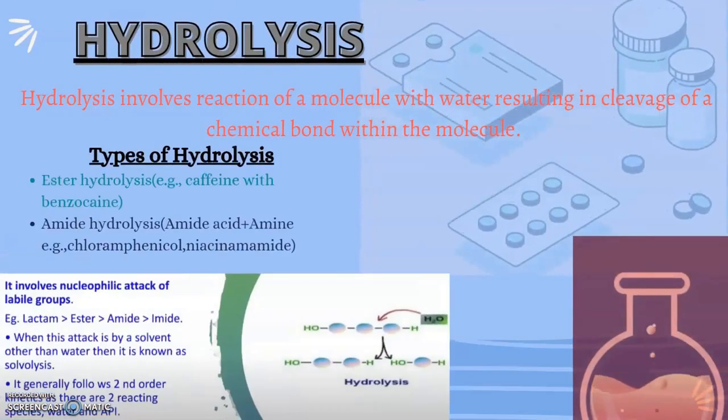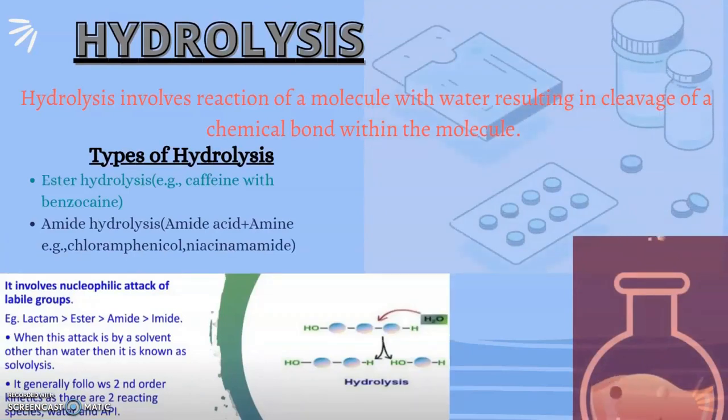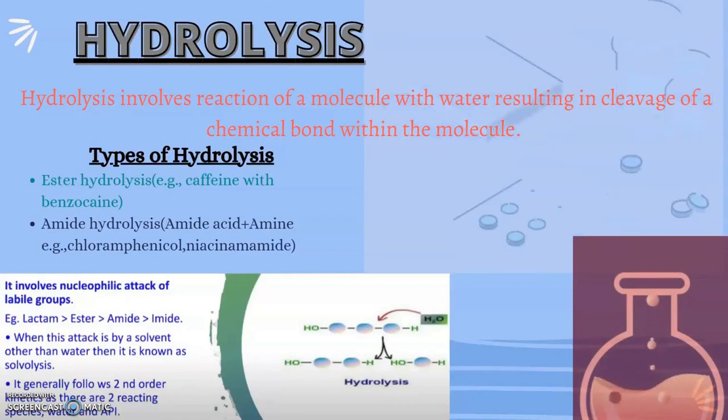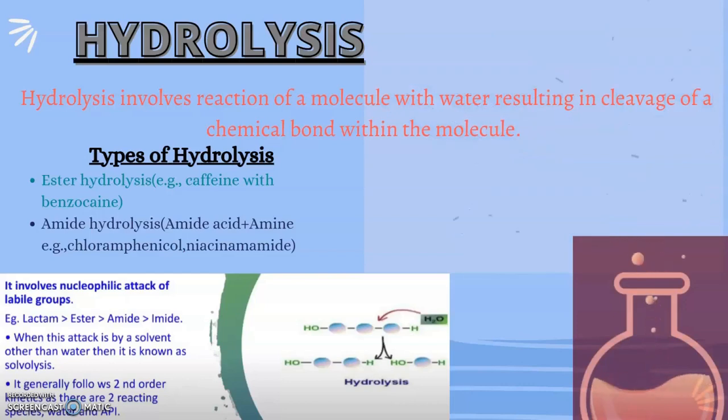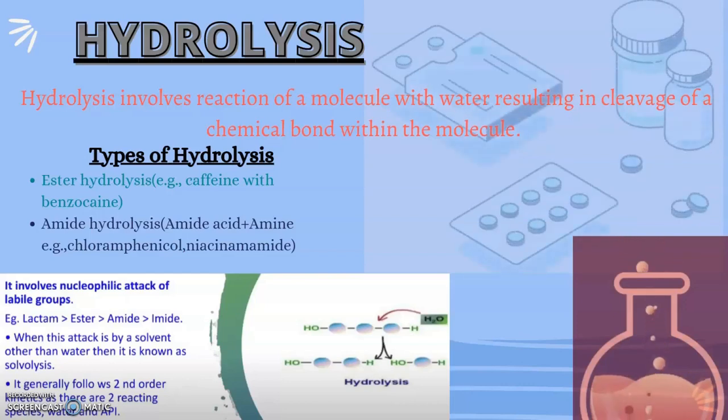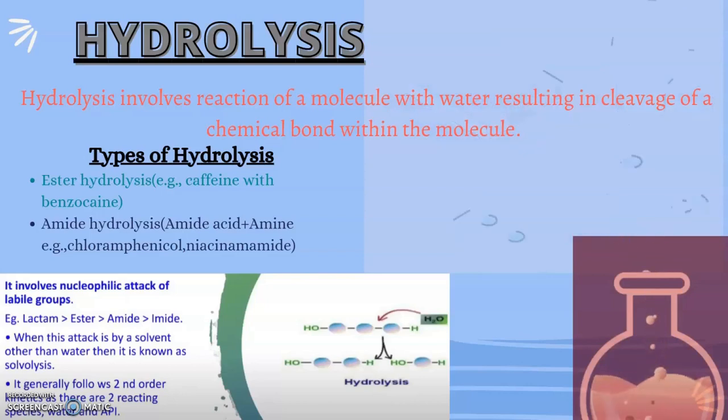First chemical property is hydrolysis. Hydrolysis involves reaction of a molecule with water resulting in cleavage of a chemical bond within the molecule. We have two types of hydrolysis: ester hydrolysis (for example, caffeine with benzocaine) and amide hydrolysis in which amide acid plus amine reaction occurs. Examples included in amide hydrolysis are chloramphenicol and niacinamide. It involves nucleophilic attack of labile groups, for example lactam, ester, amide. When this attack is by a solvent other than water, it is known as solvolysis. It generally follows second order kinetics as there are two reacting species: water and active pharmaceutical ingredient.